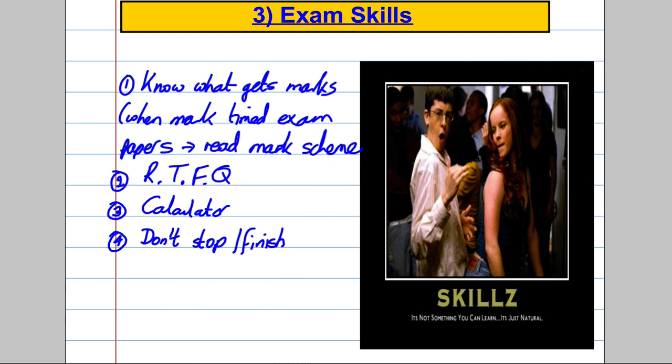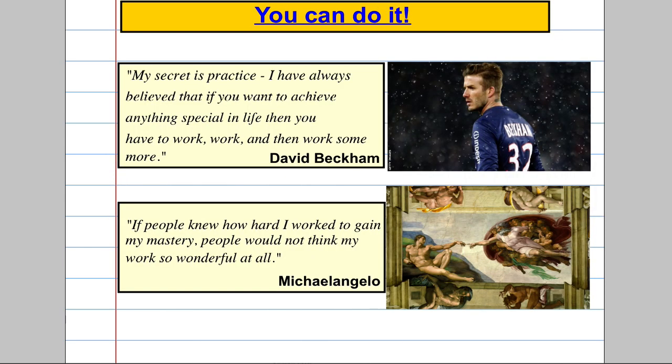The last thing I would say just to finish with, you can definitely do it. One hundred percent, I believe if you start practising now and practising properly, you would be able to get the A or A star you're looking for. All the greats know this. Beckham says, my secret is practice. I've always believed if you want to achieve anything special in life, you have to work, work, work and then work some more. Michelangelo, the greatest painter of all time, who many people said is such a natural. People said he was born with a paintbrush in his hand. He actually said, if people knew how hard I worked to gain my mastery, people would not think my work so wonderful at all. These people, successful people, work hard. And if you start working hard as of today and properly by doing maths and practising properly, you will achieve what you want to achieve.